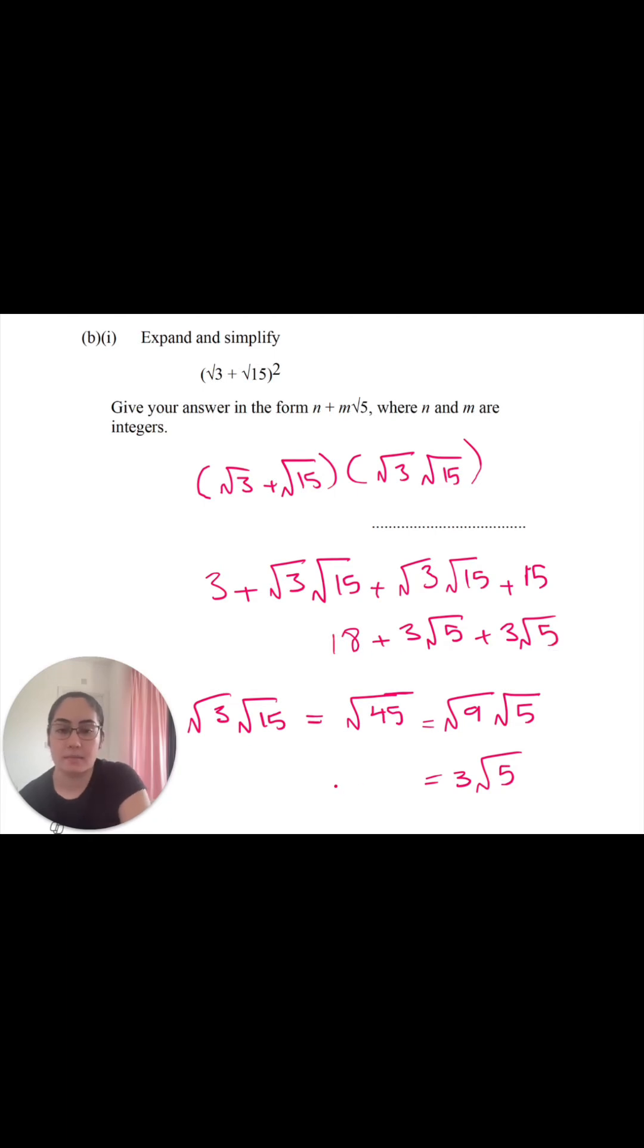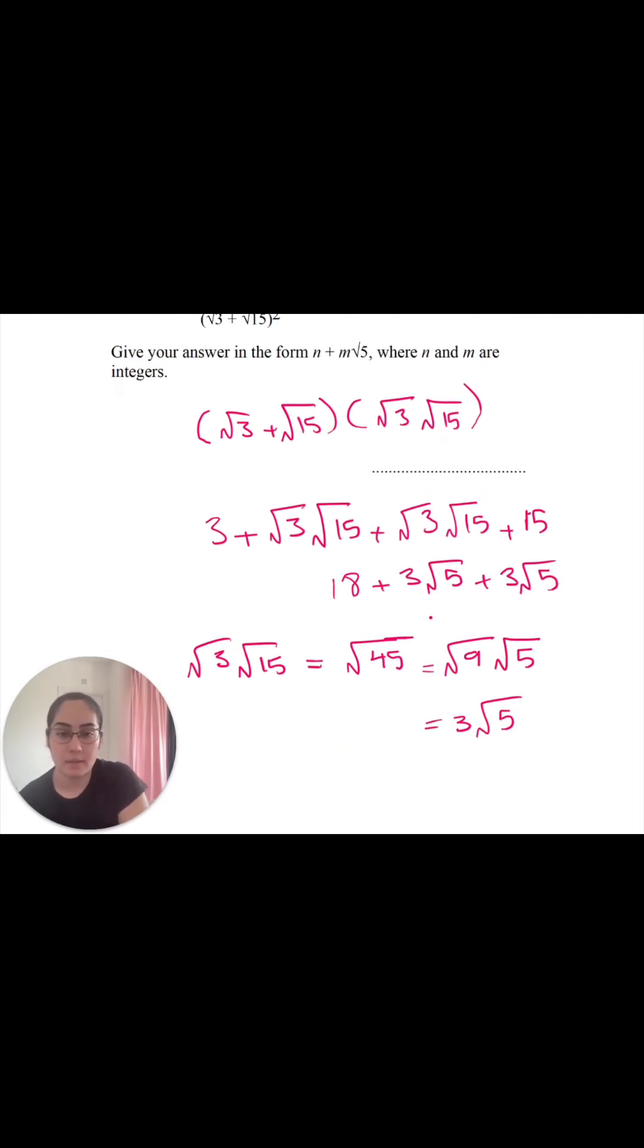And when we simplify that, if I just scroll down a little bit, we have 3 root 5 plus 3 root 5 is equal to 6 root 5. So we have 18 plus 6 root 5, and that is the most simplified answer.